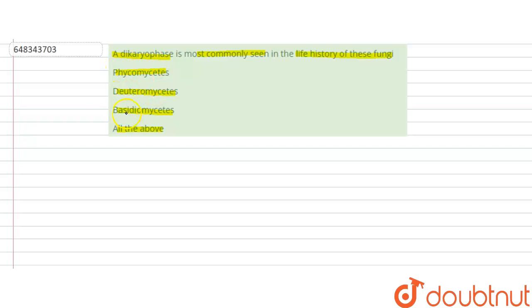First of all, what is a di carrier phase? The answer to this question would be Basidiomycetis. Now what happens in Basidiomycetis is that the karyogamy is delayed, and this karyogamy occurs just before meiosis.